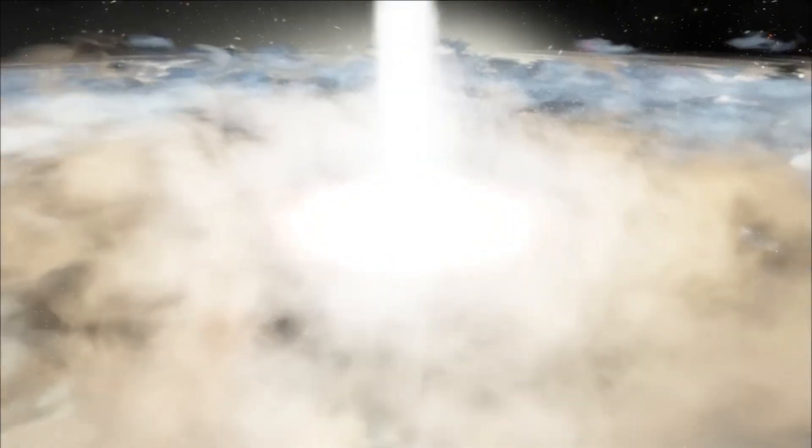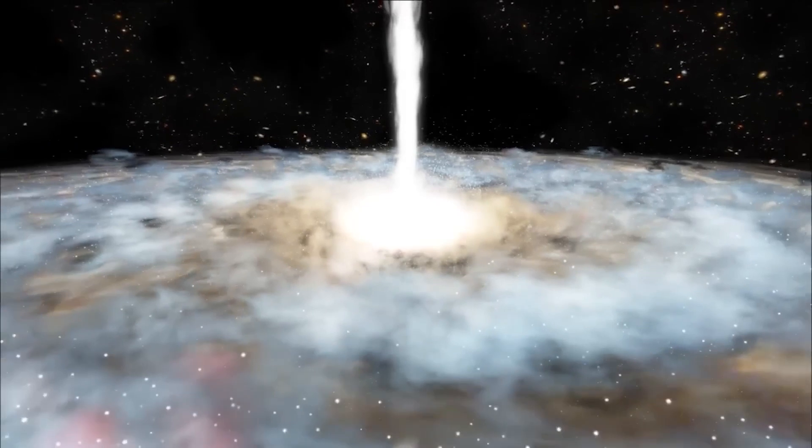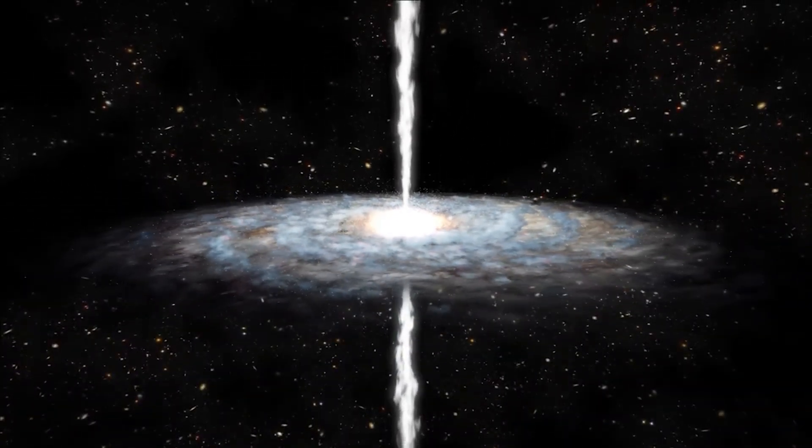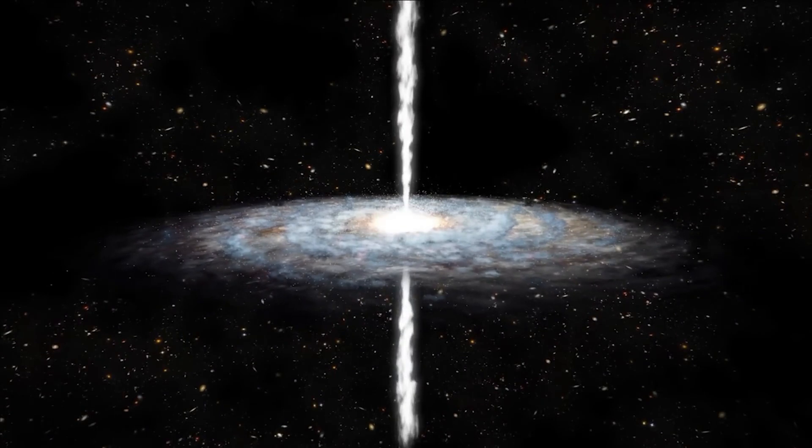One of the most interesting aspects of white holes is their possible relationship to black holes. Some scientists have proposed the idea of a wormhole connecting a black hole and a white hole, suggesting that they could be different manifestations of a unified phenomenon. According to this idea, matter falling into a black hole could emerge from a white hole in a different region of space-time or even another universe.